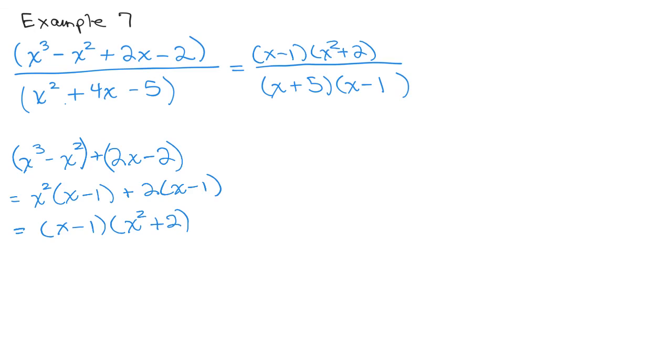And then, I'd like to see if there's a common factor I can cancel. And there we go. So, we have X squared plus 2 over X plus 5. And there we are. So, lots of different examples. Thank you very much.